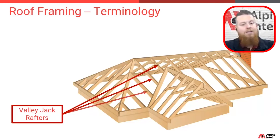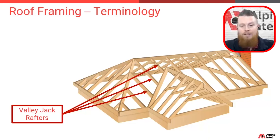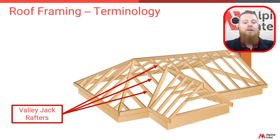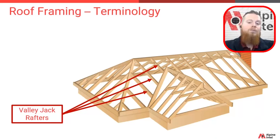Valleys have valley jack rafters, which is similar to those hip jack rafters — non-full-length pieces again — and they connect the valleys to either another full-length rafter or the valley to the ridge.